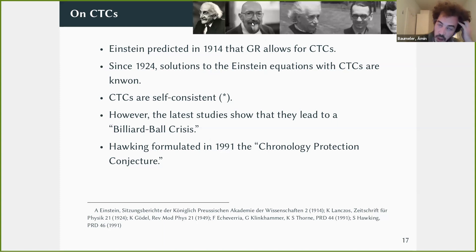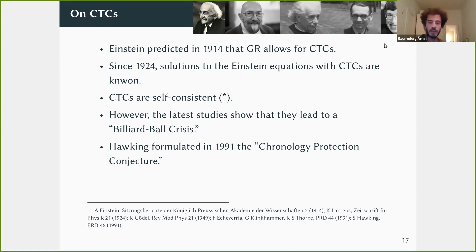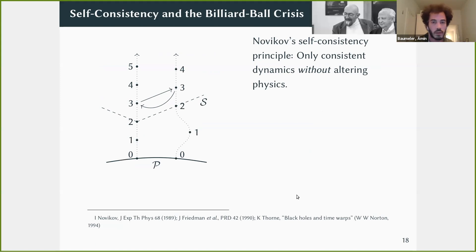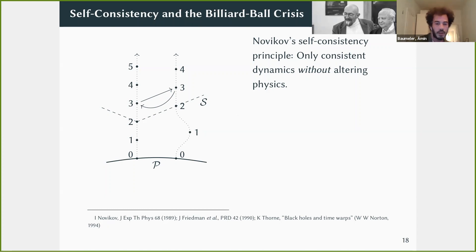CTCs were later proven to be self-consistent, mainly by Kip Thorne. However, they have the billiard ball crisis, and this development led Hawking in 1991 to formulate the chronology protection conjecture: we will never be able to construct a scenario with closed timelike curves — though this remains a conjecture.